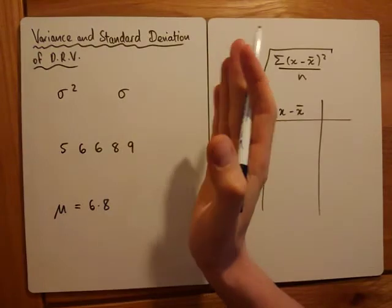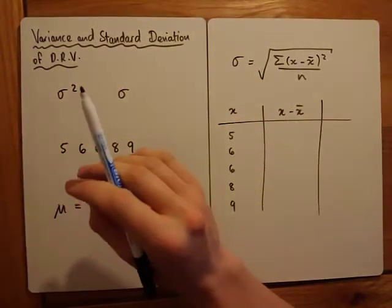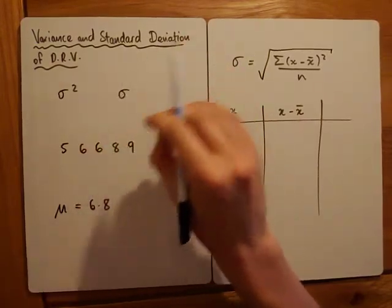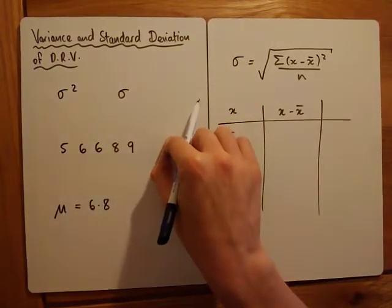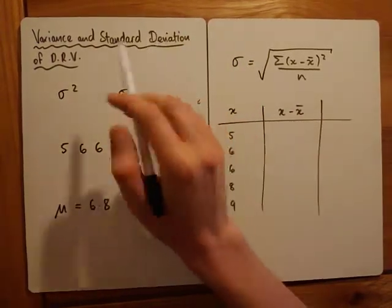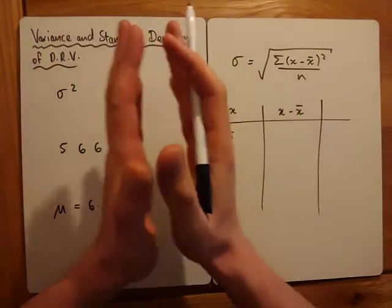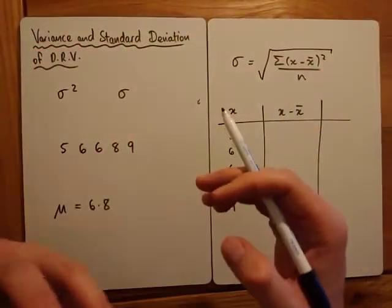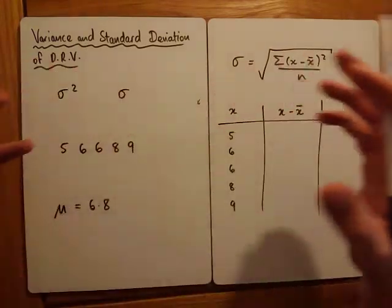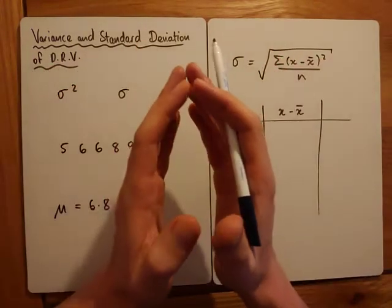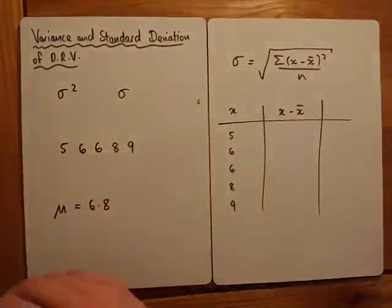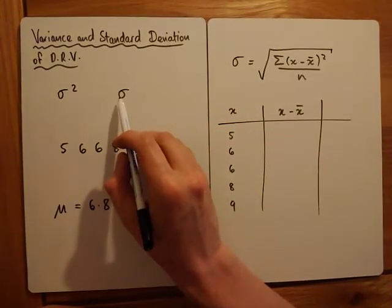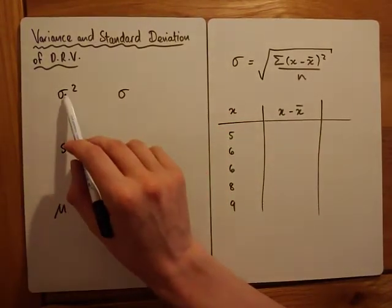Unlike a mean, which is an average telling you one value where the data is centralised, the standard deviation and variance tell you how spread out the data is. If your numbers are all really far apart you'll have a larger standard deviation; if the outcomes are closely grouped together you'll have a smaller standard deviation. The notation we use is sigma or sigma squared.